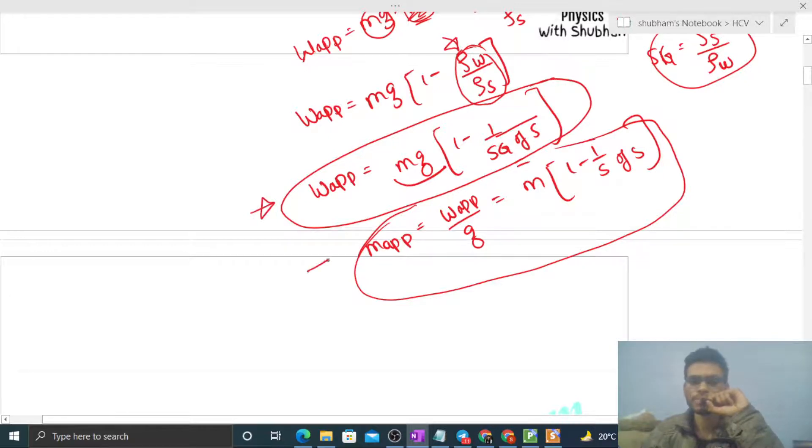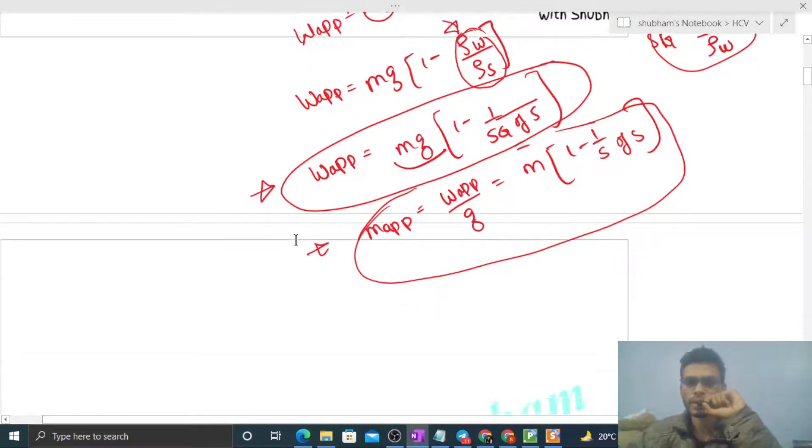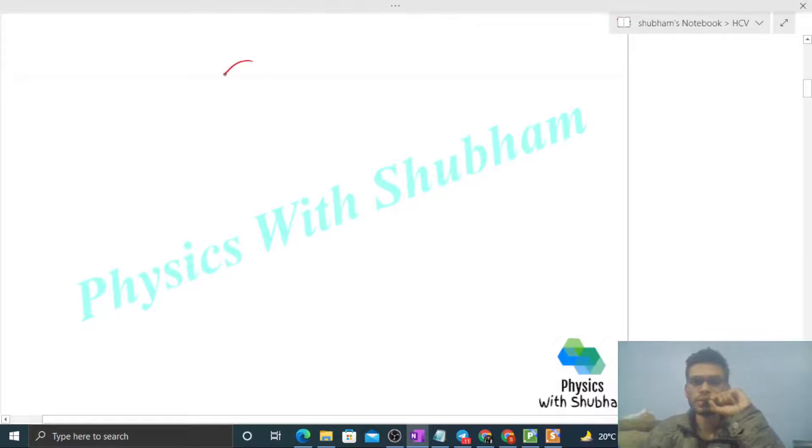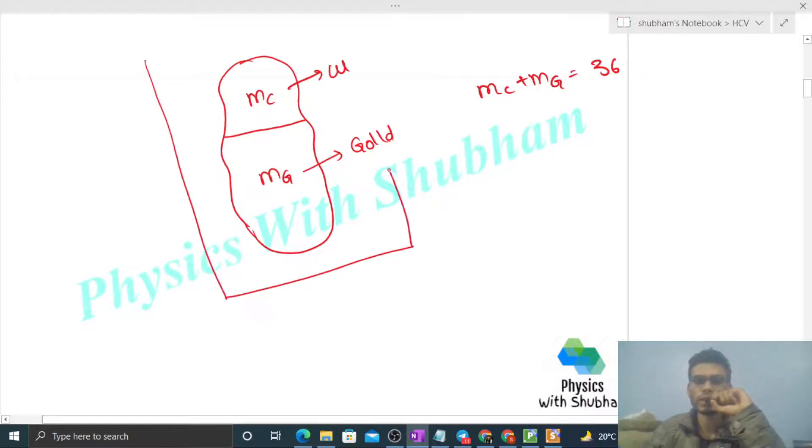Now let's jump to our problem. We have an ornament with copper and gold. Let's say mass of copper is mc and mass of gold is mg. In air, the mass given is 36 grams, so mc plus mg equals 36.